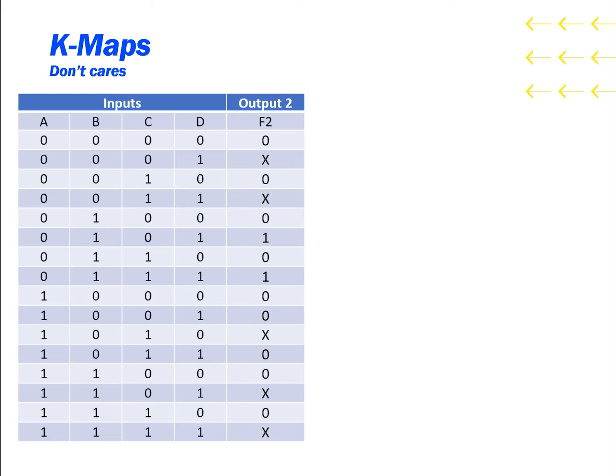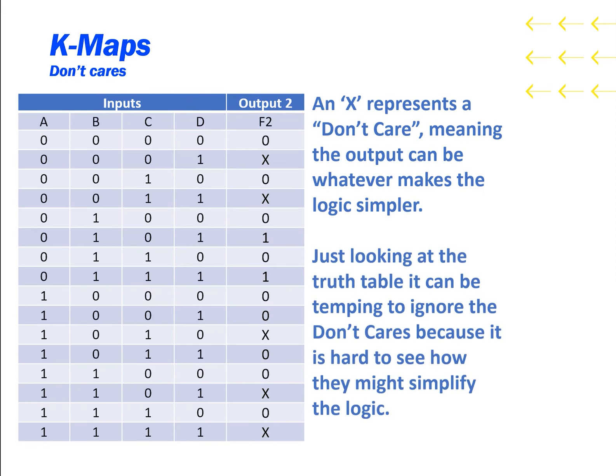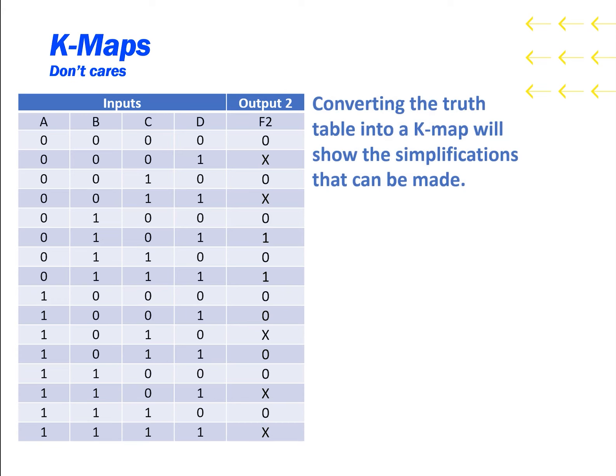Let's try another example with don't cares. An X represents a don't care, meaning the output can be whatever makes the logic simpler. Just looking at the truth table, it can be tempting to ignore the don't cares because it is hard to see how they might simplify the logic. Converting the truth table into a K-map will show the simplifications that can be made.